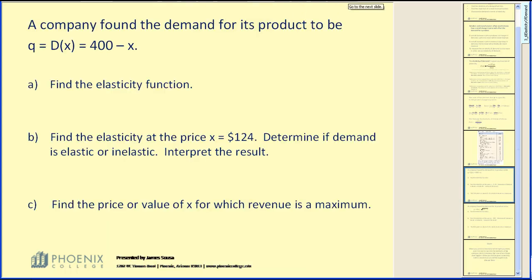Let's take a look at a couple examples. A company found the demand for its product to be q = D(x) = 400 - x. Find the elasticity function. So let's write our elasticity function again: E(x) = -x × D'(x) / D(x).